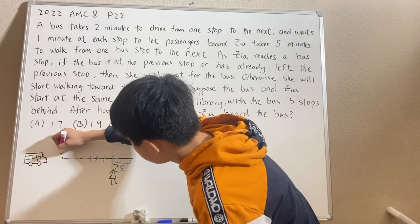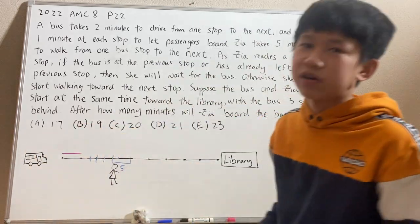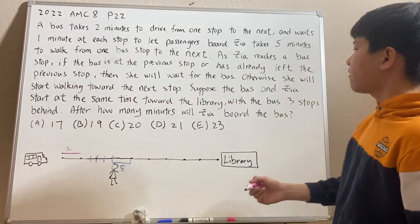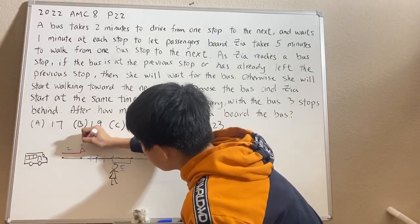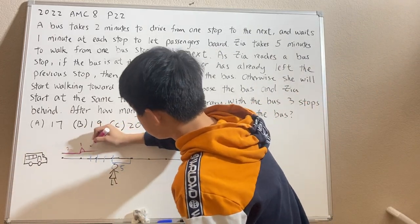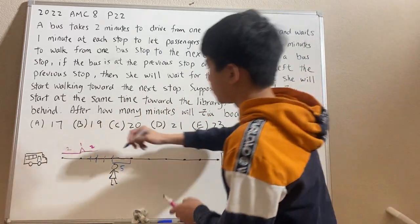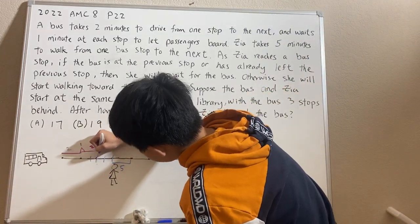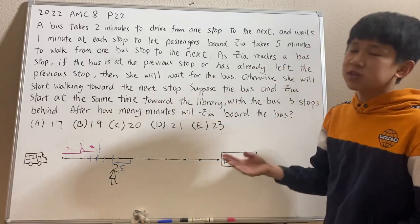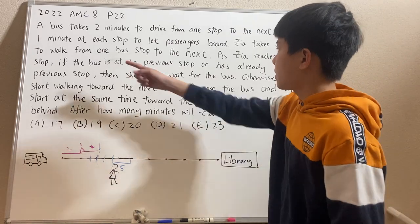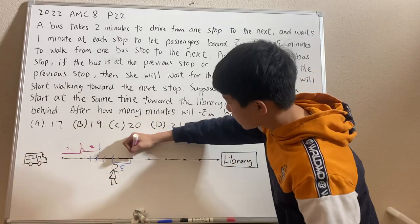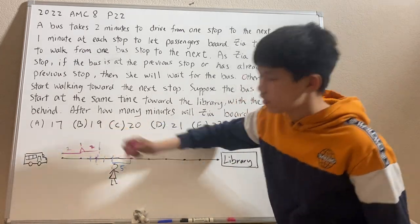So the bus starts off having already boarded passengers, then drives for two minutes, waits one minute for passengers, then drives another two minutes — so in total that's five minutes. We can draw a dash here for this five-minute mark. After five minutes, does the bus's position satisfy the requirement? No, it doesn't, because the bus is not at the previous stop and has not already left. Zia is all the way over here and the bus is still far behind.